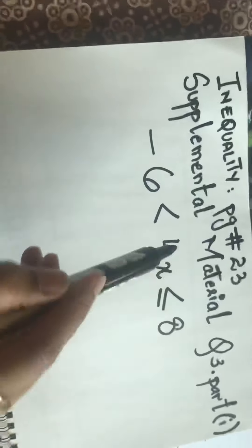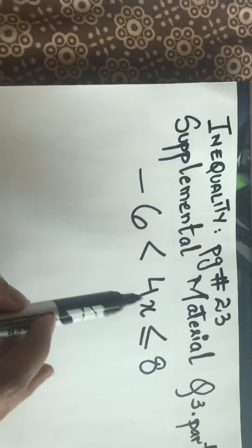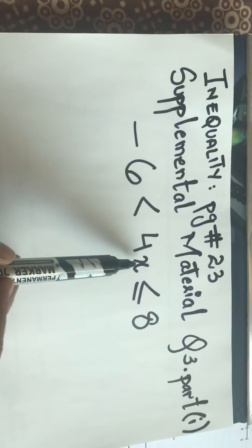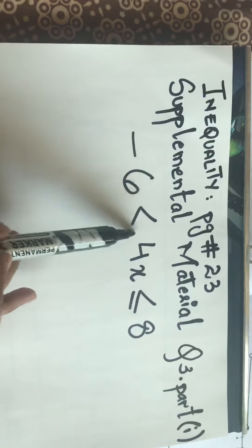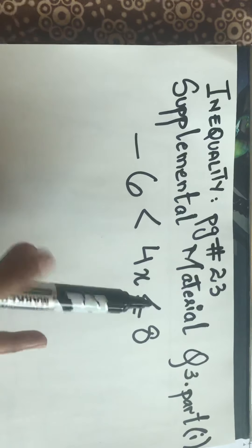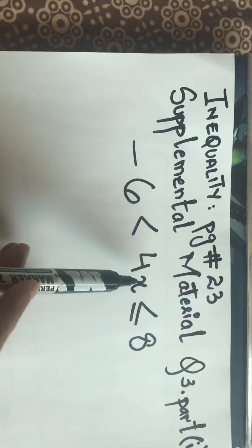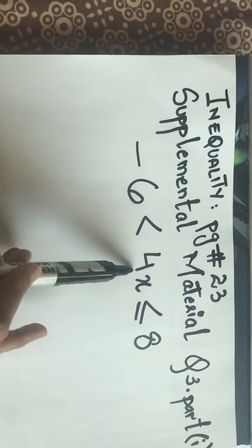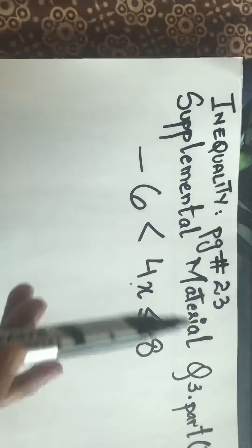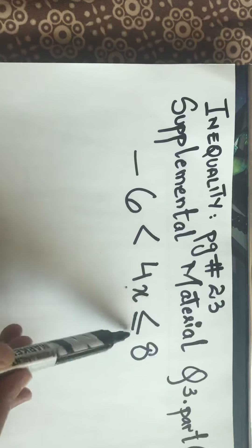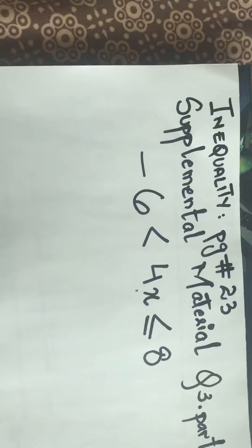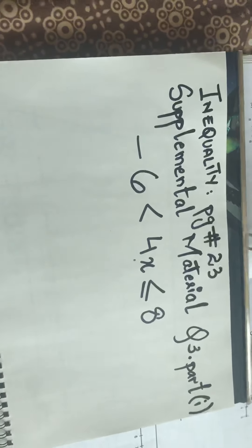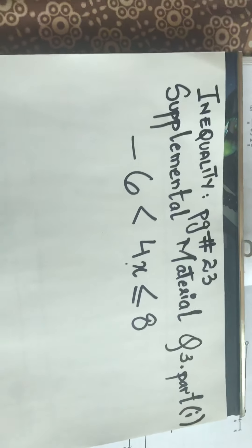Now, notice that four X is written in the middle. We read the inequality in such a way that four X is greater than minus six — because the sign opens towards four X — and four X is lesser than or equals to eight. That is how we read this compound inequality.